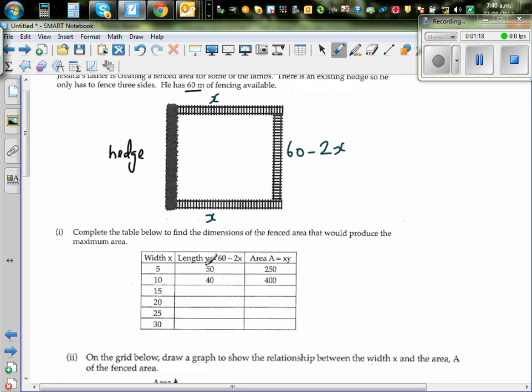So this is your length, and if it is 5, your length would be 60 minus, this is your y. This is nothing but your y. So this is x times y or 60 minus 2x. 60 minus 10 is 50, 60 minus 20 is 40. If it is 15, 60 minus 2 times 15 is 30. So 60 minus 30 is 30. If it's 20, 60 minus 2 times 20 is 40, so 60 minus 40 is 20. If it's 25, it's 50, so 60 minus 50 is 10.